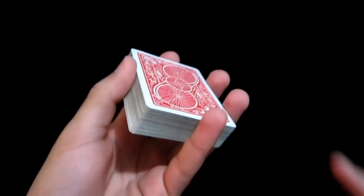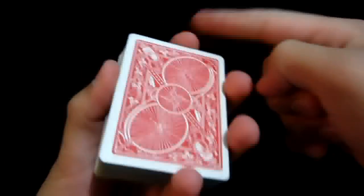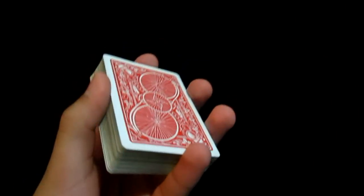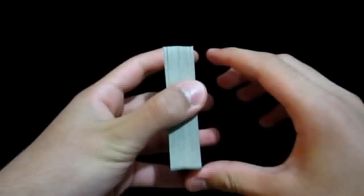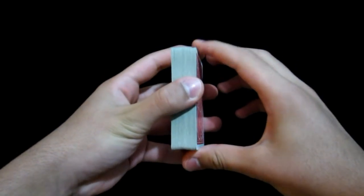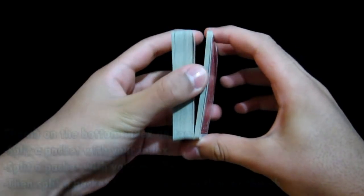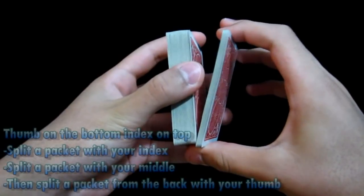You're going to start off by holding the deck in Straddle grip. So you've got your pinky here, index here, middle up, and ring finger right over here. You're going to come over with your other hand, having your thumb resting on the bottom and your index on top.